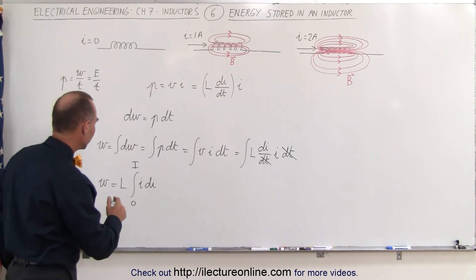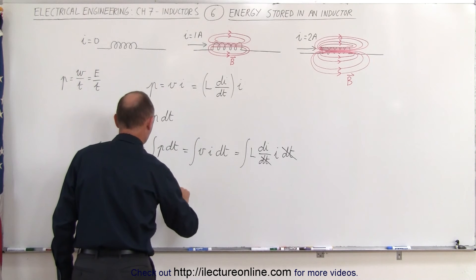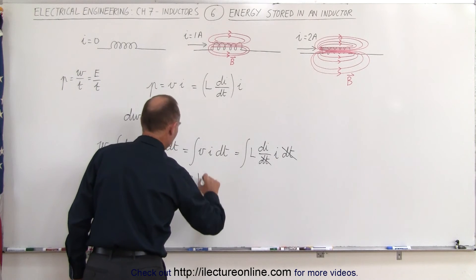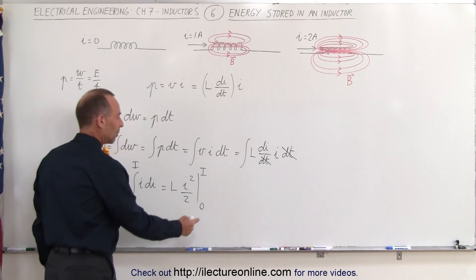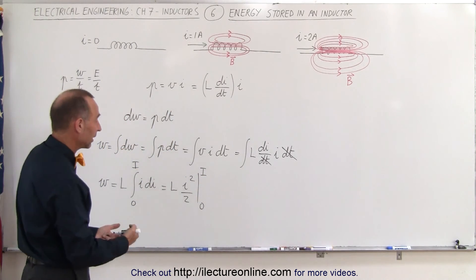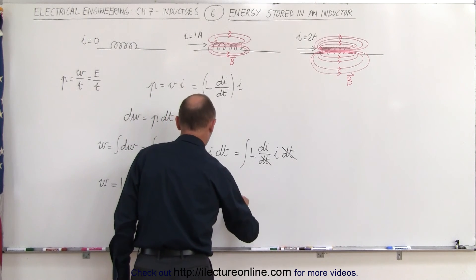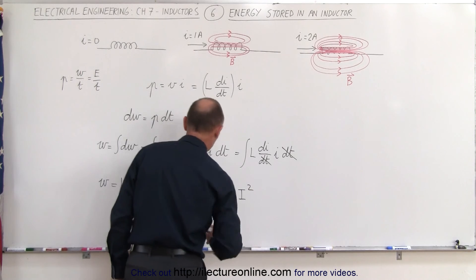And so this can then be written as L times I squared over 2, and the limits of integration zero to final current. When we plug in the final I, we get equal to 1/2 times inductance times the final current squared.